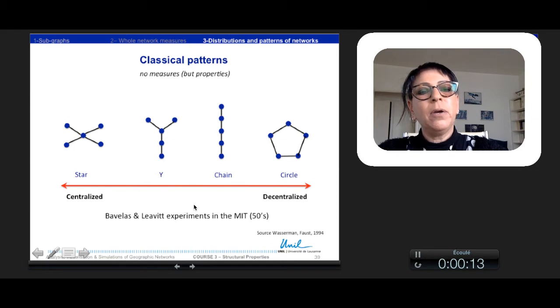In the 50s began a lot of experiments in the MIT to test the different properties of very simple and classical patterns like star, y, chain, circle, and showing their properties of centralized or decentralized networks. But they did not develop reliable measures.